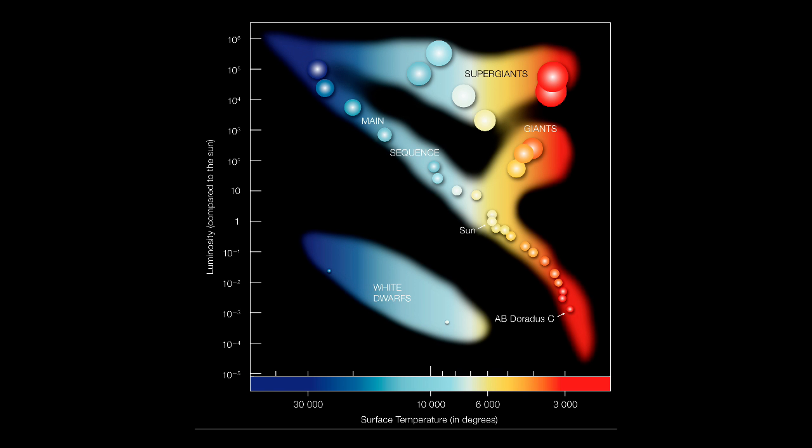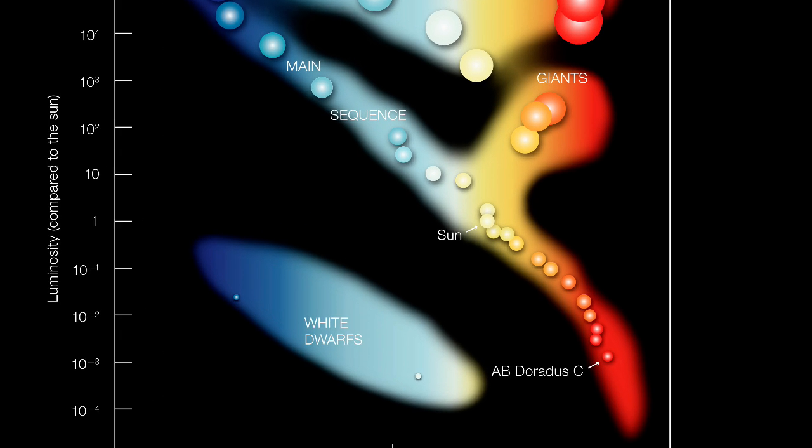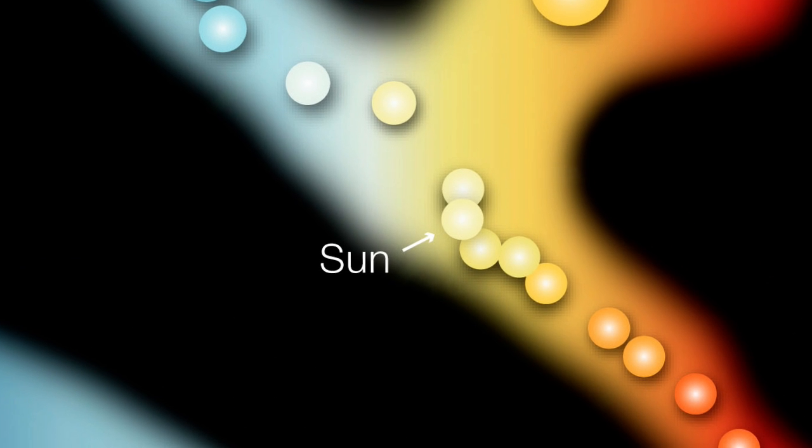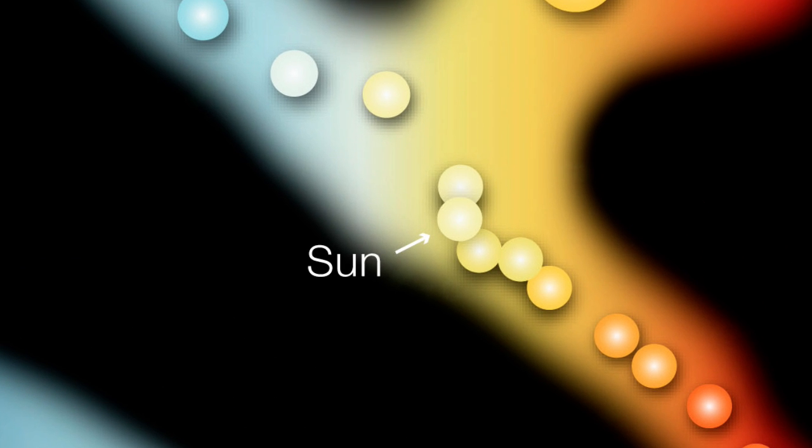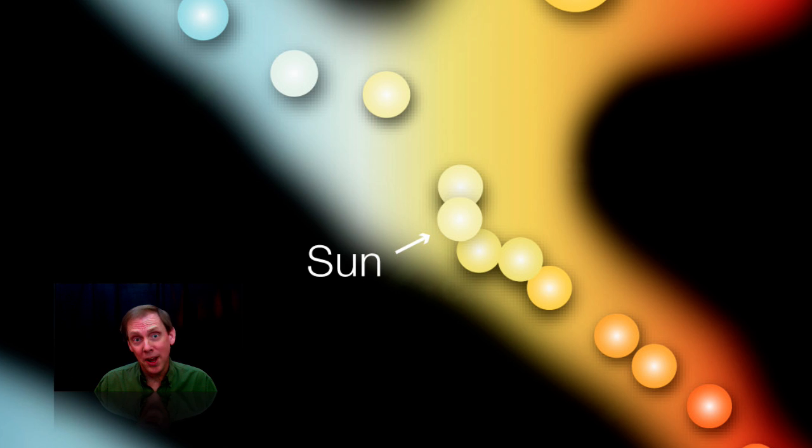So the brighter the star, the shorter its lifespan. As you can see from the Hertzsprung-Russell diagram, our sun lies somewhere in the middle along the main sequence. Its lifespan is expected to be about 10 billion years. It's already about 5 billion years old, so it's got another 5 billion to go before it...